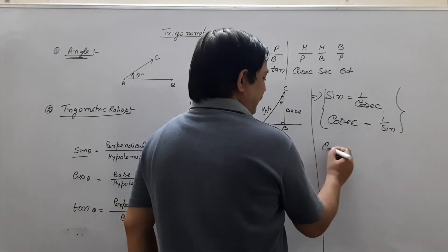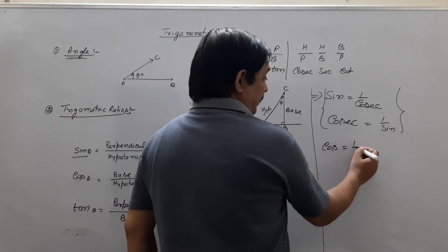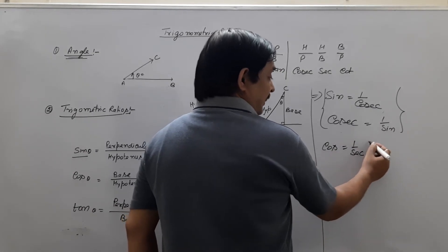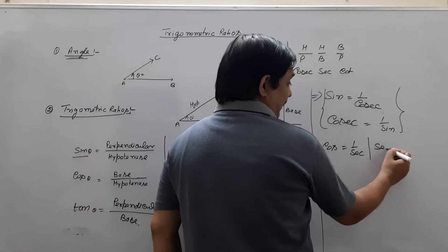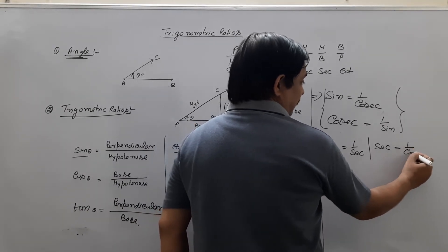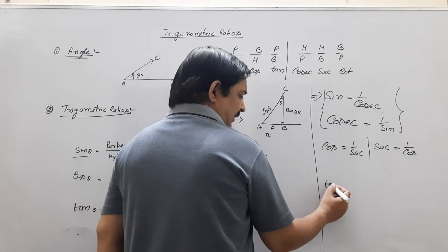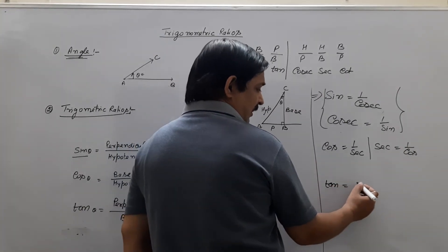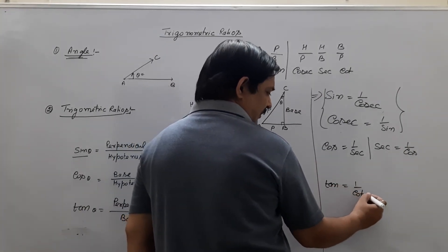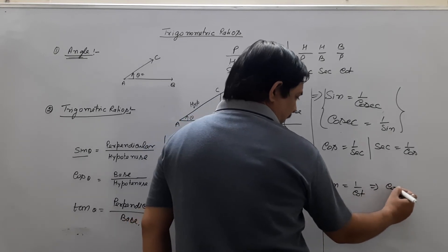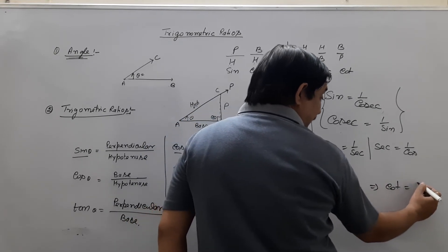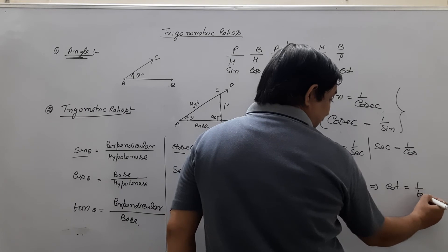Cos, one upon sec. Sec, one upon cos. What is the problem? Tan, reciprocal cot. And cot, reciprocal tan.